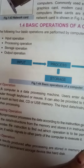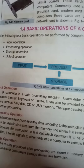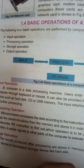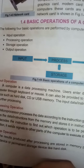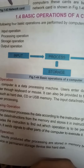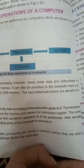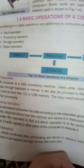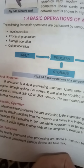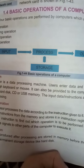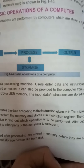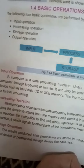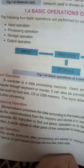The first is input. In input, we give data to the computer through input devices such as the keyboard and mouse. It can also provide input to the computer from devices such as a hard disk, CD, or USB card memory. These input data and instructions are stored in memory for further processing.